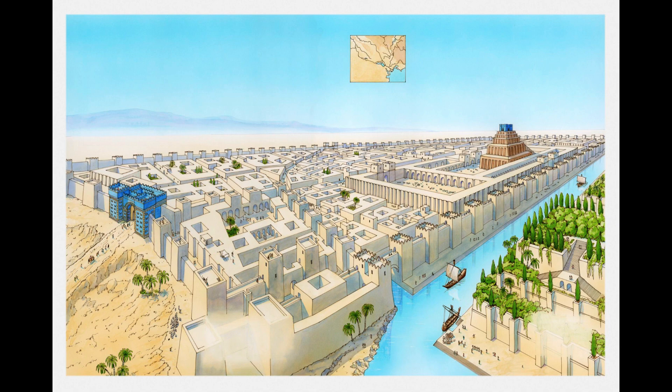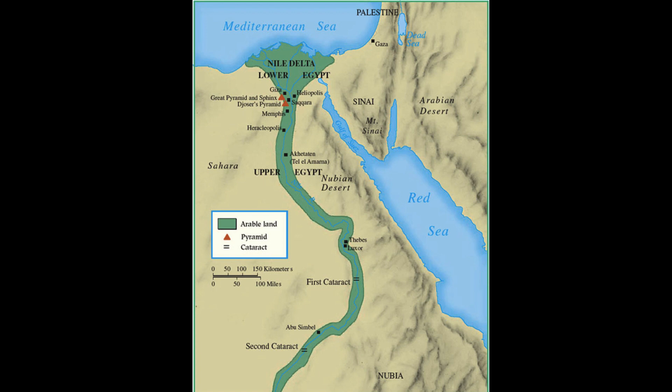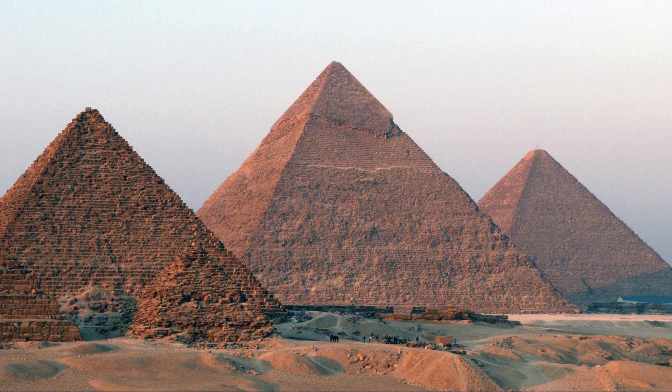Civilization also developed along Egypt's Nile River, a more predictable river than those in Mesopotamia, and Egyptian religion reflected its more benign nature. The Nile also served as a unifier of ancient Egypt, and surrounded by desert, Egypt was less subject to invasion. Egyptian pharaohs were perceived as gods, unlike the rulers of Mesopotamia, and their tombs were the pyramids that were constructed during the Old Kingdom, about 2575–2125 BCE.